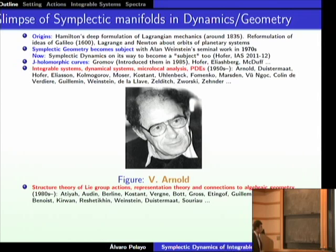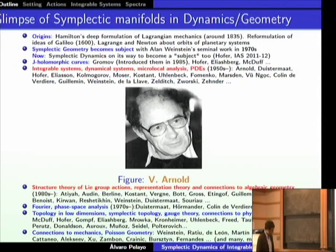Another aspect I have been very interested in is the structure theory of Lie group actions and the connections with representation theory and algebraic geometry. Many names are here, like Duistermaat, Kostant, Berline, Guillemin, Rawnsley, and Weinstein. There is also a Fourier theory phase space analysis aspect, pioneered by Hans Duistermaat and Hörmander, and many authors have contributed to this, for example Colin de Verdière and Jean-Michel Bismuth.